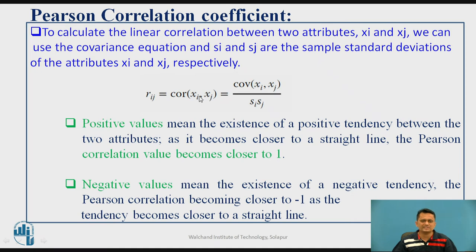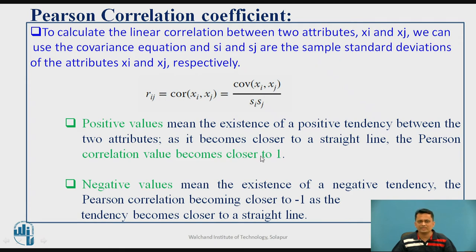This is known as the Pearson correlation coefficient. If the correlation value is positive, it indicates the existence of a positive tendency — that is, direct proportionality between the two attributes. As the relationship approaches a straight line, the Pearson correlation value becomes closer to 1, indicating an exact linear relationship. Similarly, if there is negative tendency — inverse proportionality — the Pearson correlation value will approach minus 1.